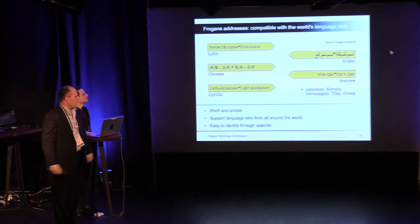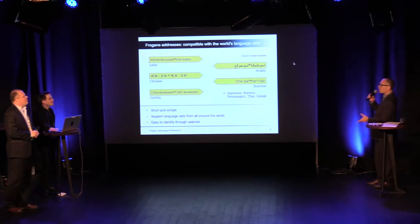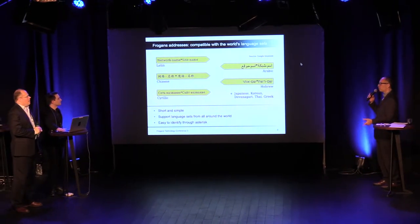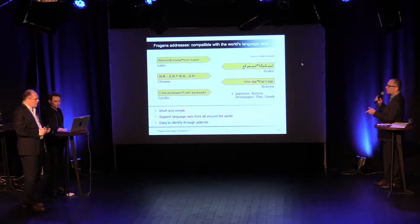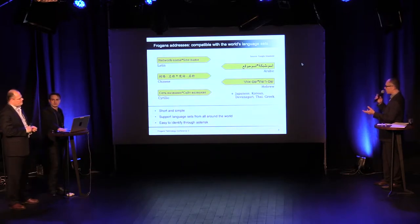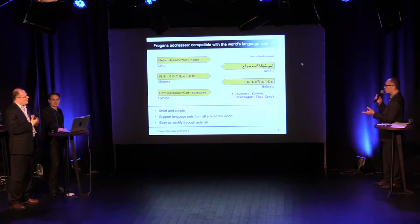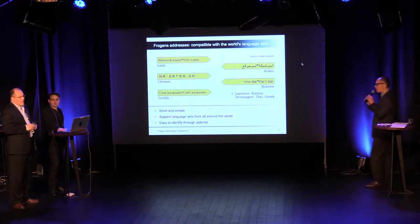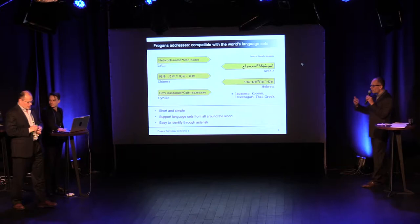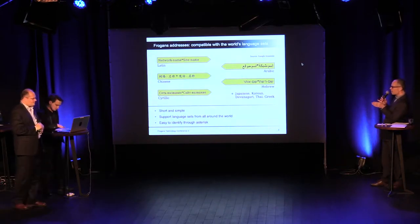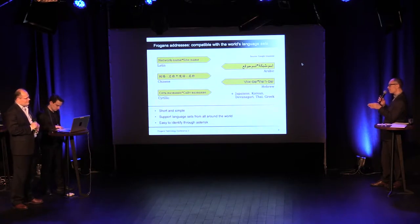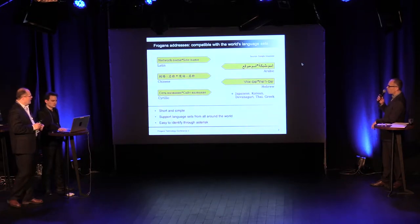While talking about addresses, people used to domain names will know that addresses on the internet all have an extension — the right-hand side part of the address, the suffix. With Frago's addresses, the structure is simpler: you don't need to know the extension. However, there is still the notion of a differentiated part on the left and right-hand side. Could you tell us more about this?